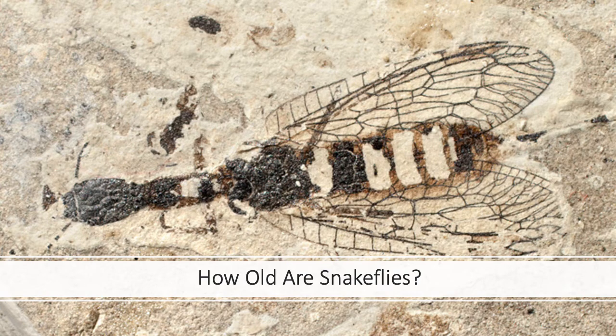There were a lot more families and genera present in the past — about seven different families. However, over time, the snake flies lost a lot of their diversity. Today there are only two families.